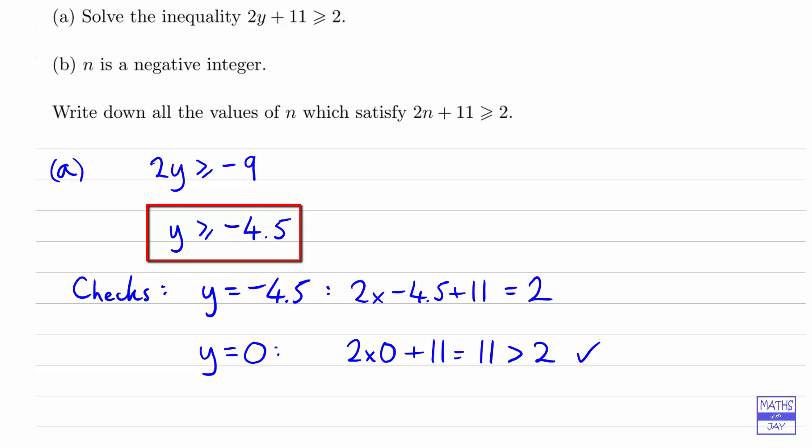Except it couldn't actually be equal to negative 4.5, because remember n's got to be a whole number. So having done the first part, we can now do part B. We can simply write down the answers. The first negative number that's bigger than negative 4.5 is negative 4.